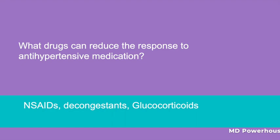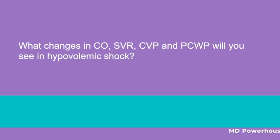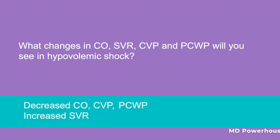What changes in cardiac output, systemic vascular resistance, CVP, and PCWP will you see in hypovolemic shock? Decreased cardiac output, CVP, and PCWP, with increased SVR.